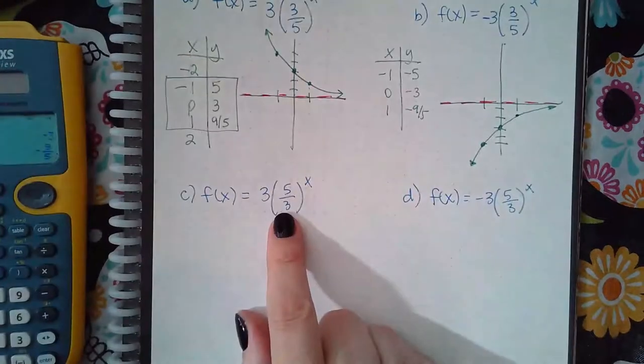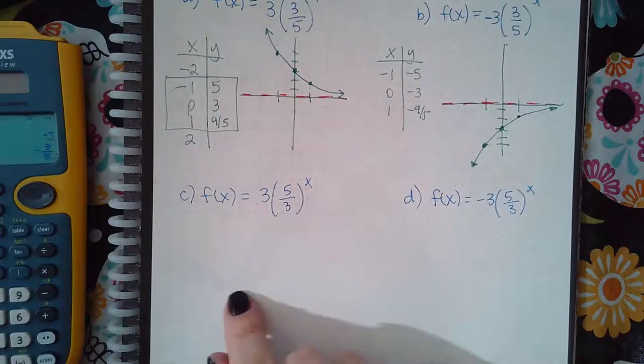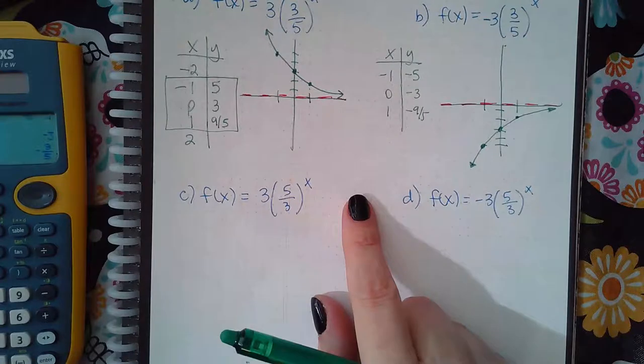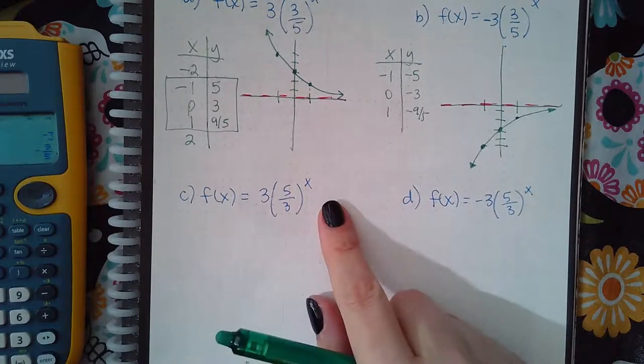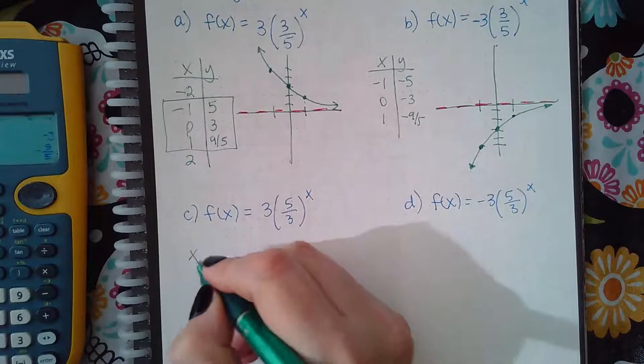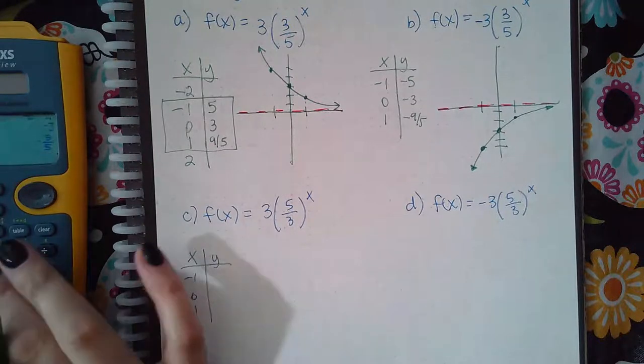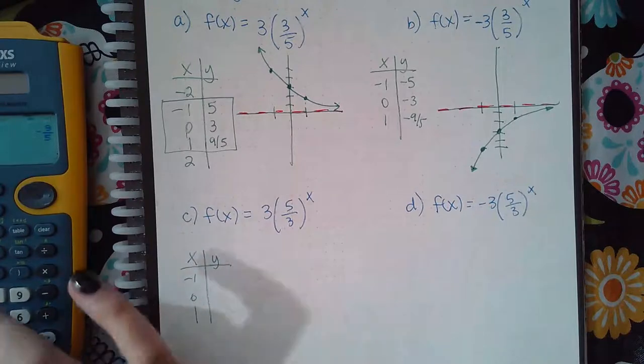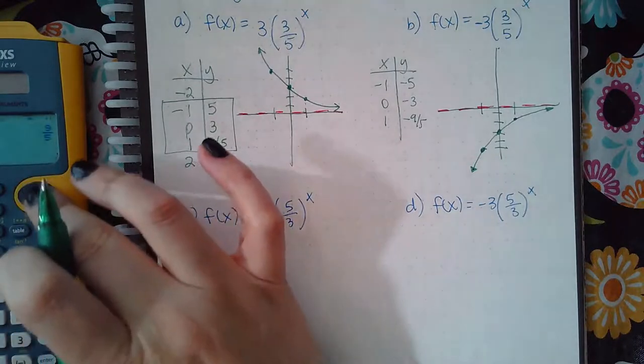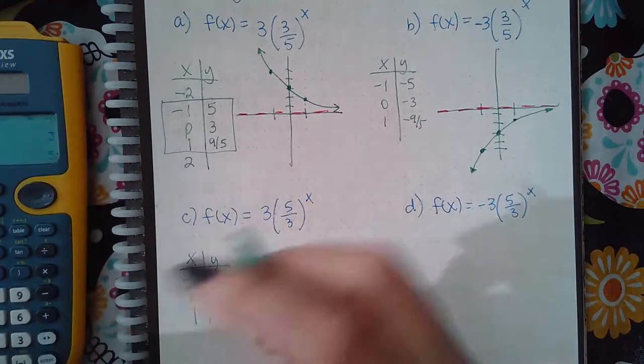Now notice that this base is bigger than one. Five thirds is one and two thirds, which is bigger than one. So I know that it's going to go to the right. It'll get close to the asymptote on the left, but it'll be going either up or down to the right. Now, because it's positive, it'll be going up, but notice that this one is negative. So most likely it's going to be going down to the right. But again, the table will tell you all of that. So if I plug these in there, three and then five over three raised to the negative one, I get nine fifths. When I raise it to the power zero, I get three. And when I raise it to the power one, I get five.